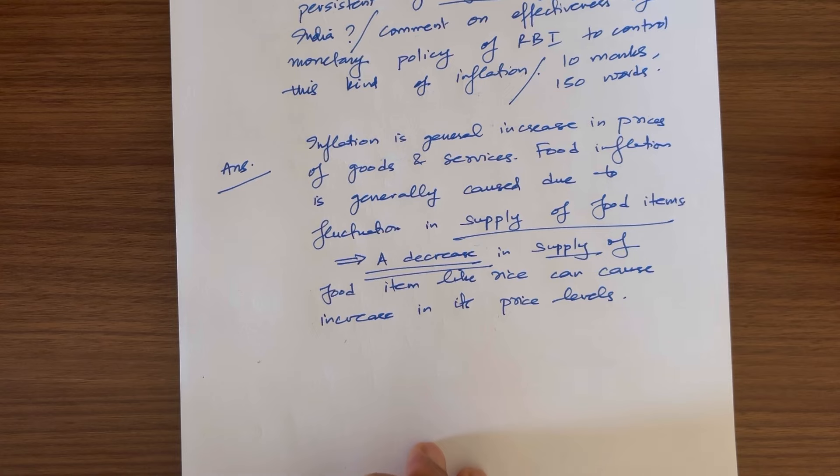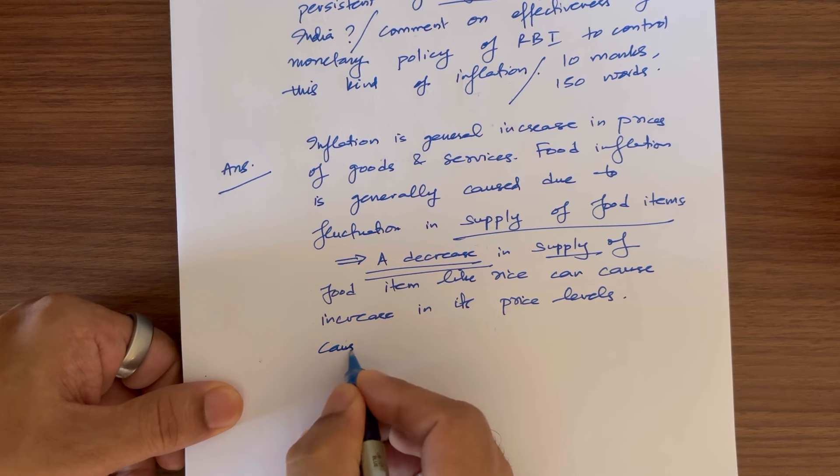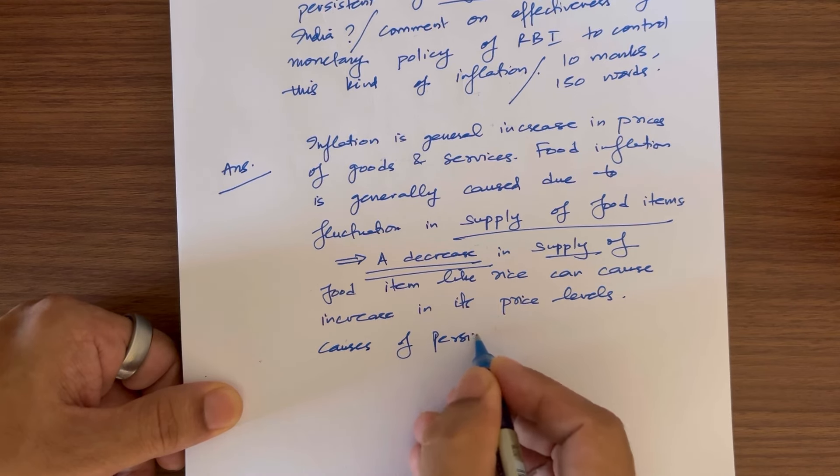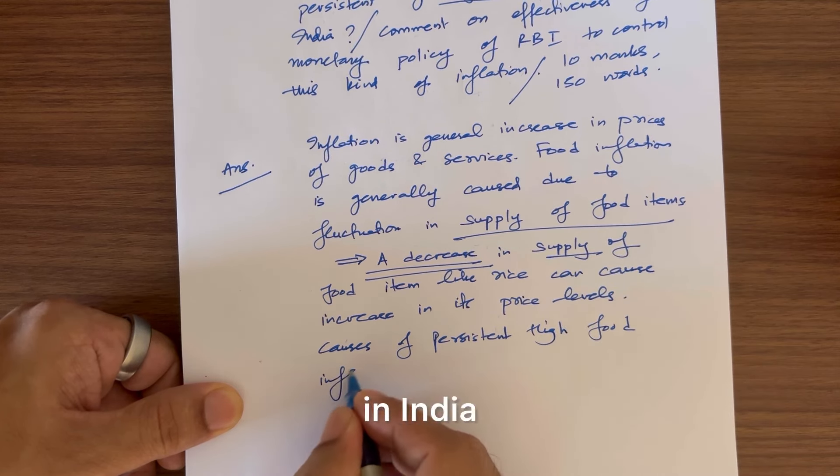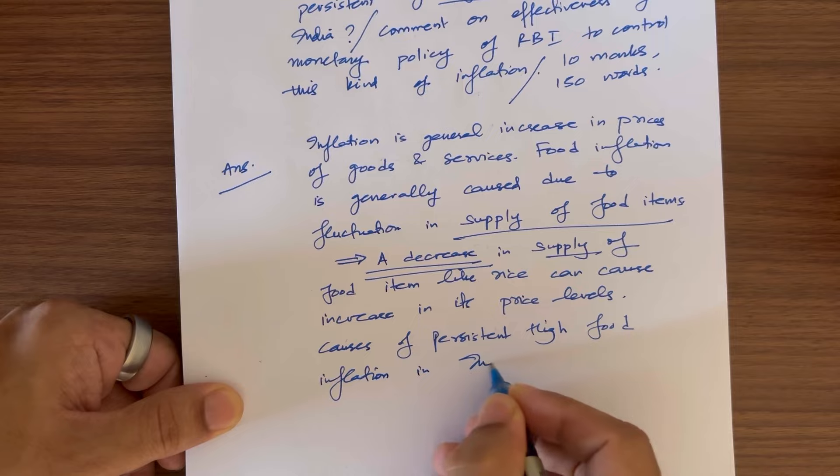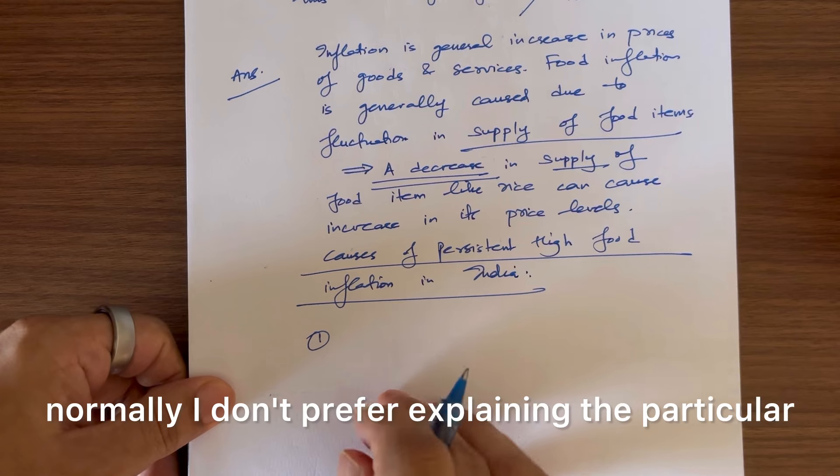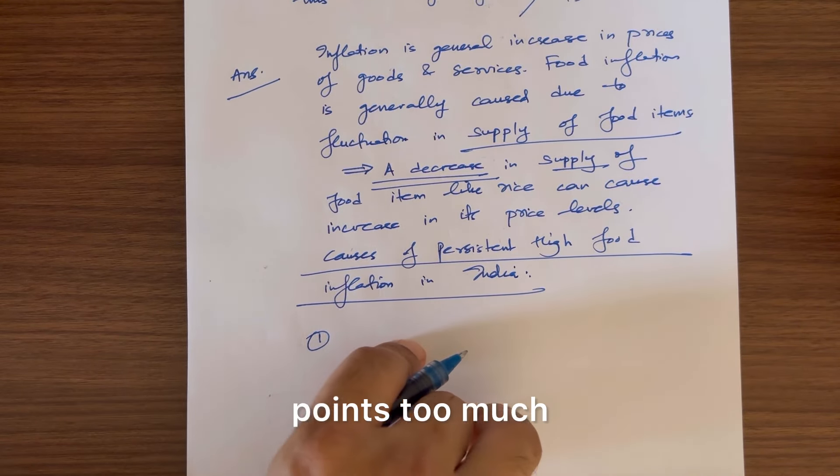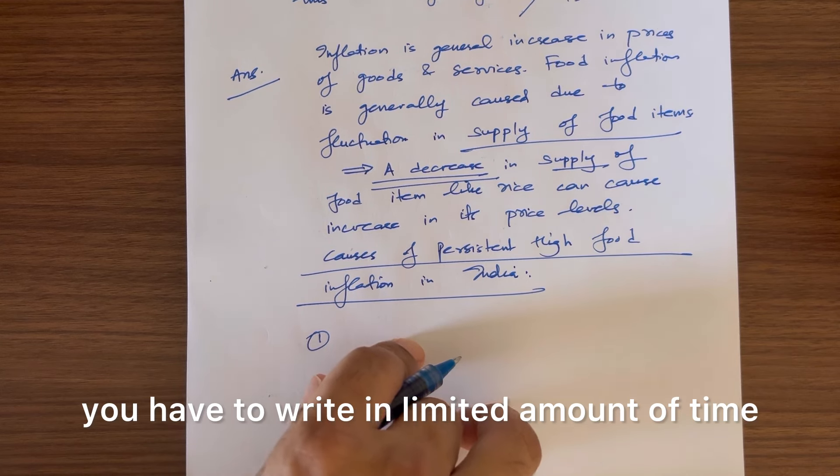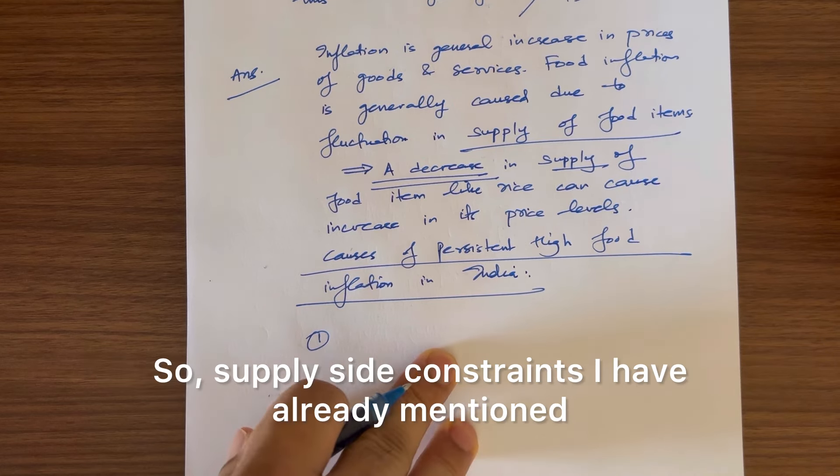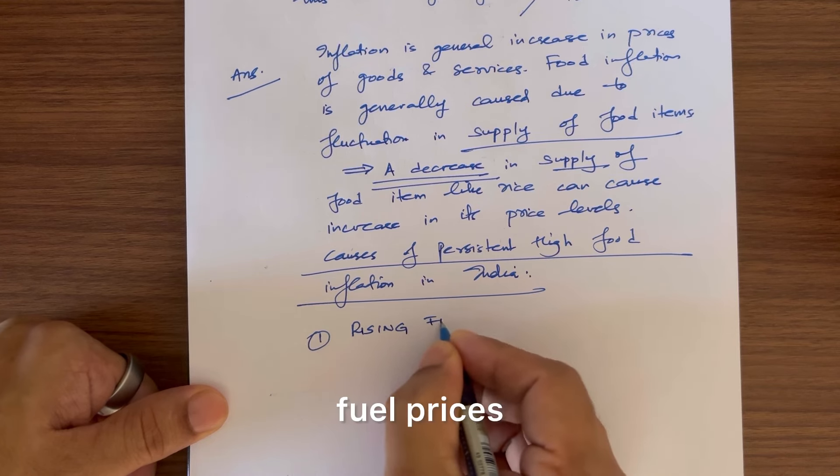Now you can provide various reasons, causes of persistent high food inflation. Then you can write one by one reasons. Normally, I don't prefer explaining the particular points too much because it can cause you to write too much and you don't have infinite amount of time. You have to write in limited amount of time. So it is better to always limit the amount of time in which you are writing. Supply side constraints I have already mentioned. You can start with rising fuel prices.